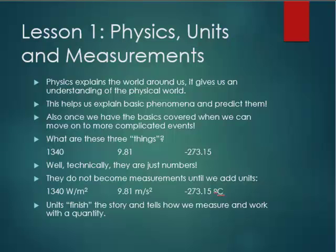So the first one is 1340 watts per meter squared, and that's the average energy we receive per square meter from the sun. Next we have 9.81 meters per second squared, a number you'll become very familiar with in this class, and that's acceleration due to the Earth's gravity. And last but not least, we have minus 273.15 degrees Celsius, which is absolute zero, the coldest possible temperature. The units are extraordinarily important because just because two numbers may be different doesn't mean they're not the same value. Units finish the story and tell us how we measure and work with quantity.